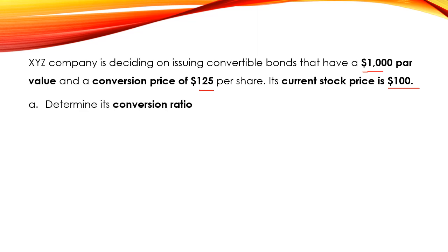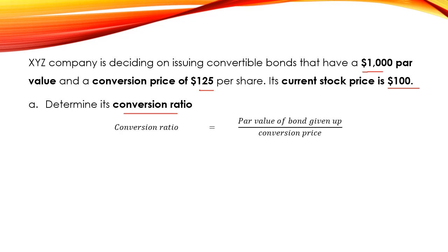Question A is to determine the conversion ratio of XYZ company. The conversion ratio is equal to the par value of the bond given up over the conversion price. The par value is $1,000 and the conversion price is $125.